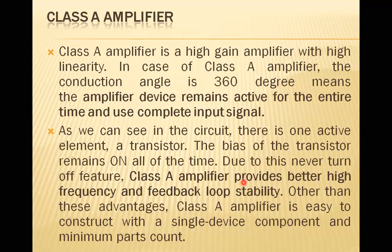Now let us look at Class A operation. A Class A amplifier is a high-gain amplifier with high linearity. The conduction angle is 360 degrees, meaning the amplifier device remains active for the entire time and uses the complete input signal. The transistor bias remains on all the time, and due to this never-turn-off feature, Class A provides better high frequency and feedback loop stability.